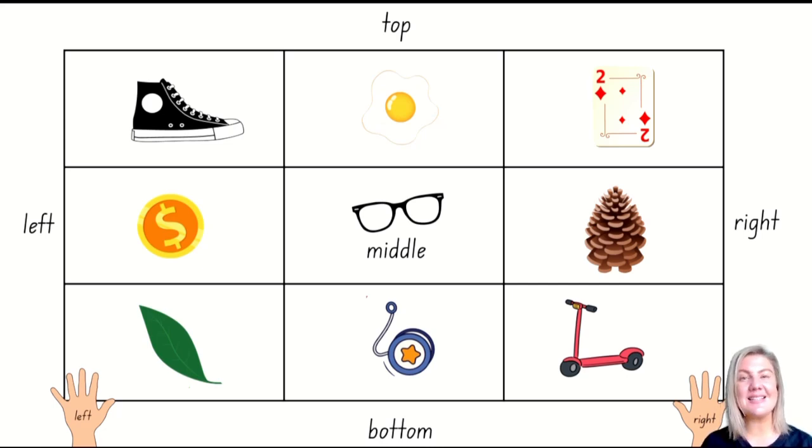Little mathematicians, I see something on the left side of the screen, in the middle. It's over on the left. And if I'm looking up and down, it's in the middle. It's a gold coin. If you said gold coin or a coin, you're correct.